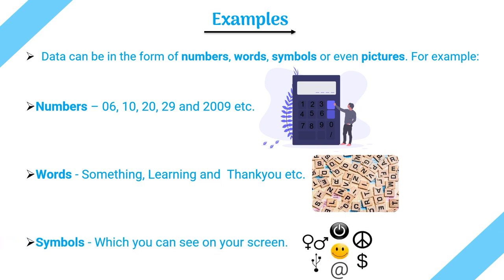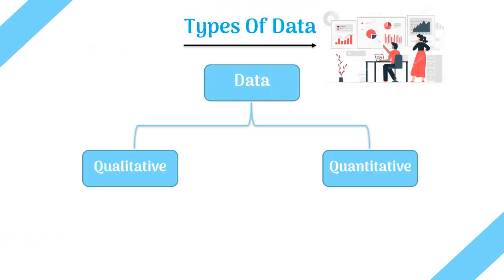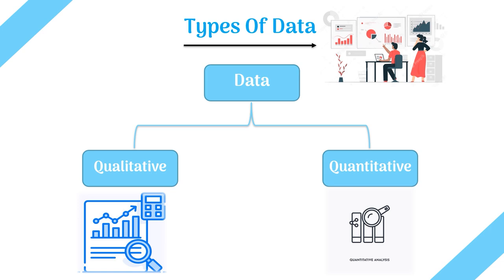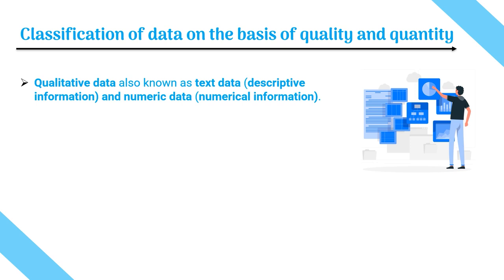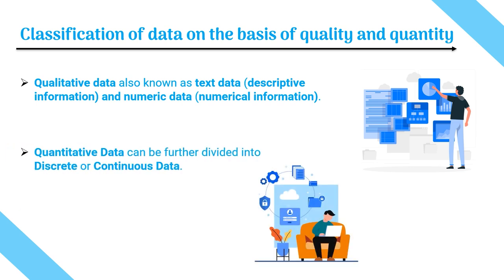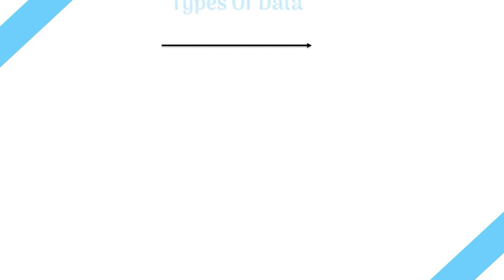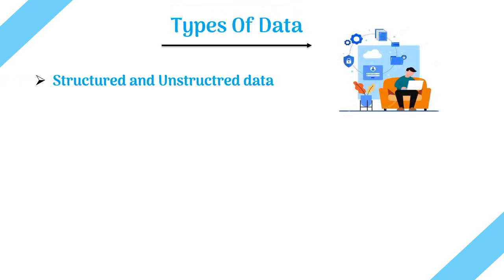Data can be qualitative or quantitative. Qualitative data, also known as text data, is descriptive information — it describes something. Quantitative data, also known as numeric data, is numerical information. Quantitative data can be further divided into discrete or continuous data.